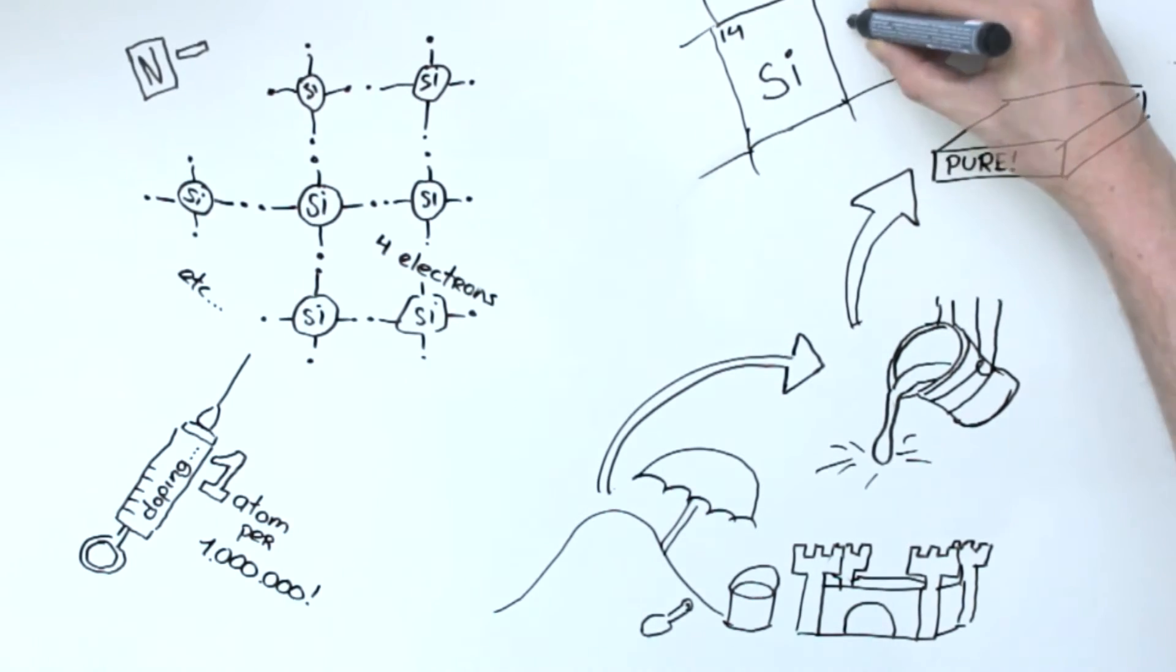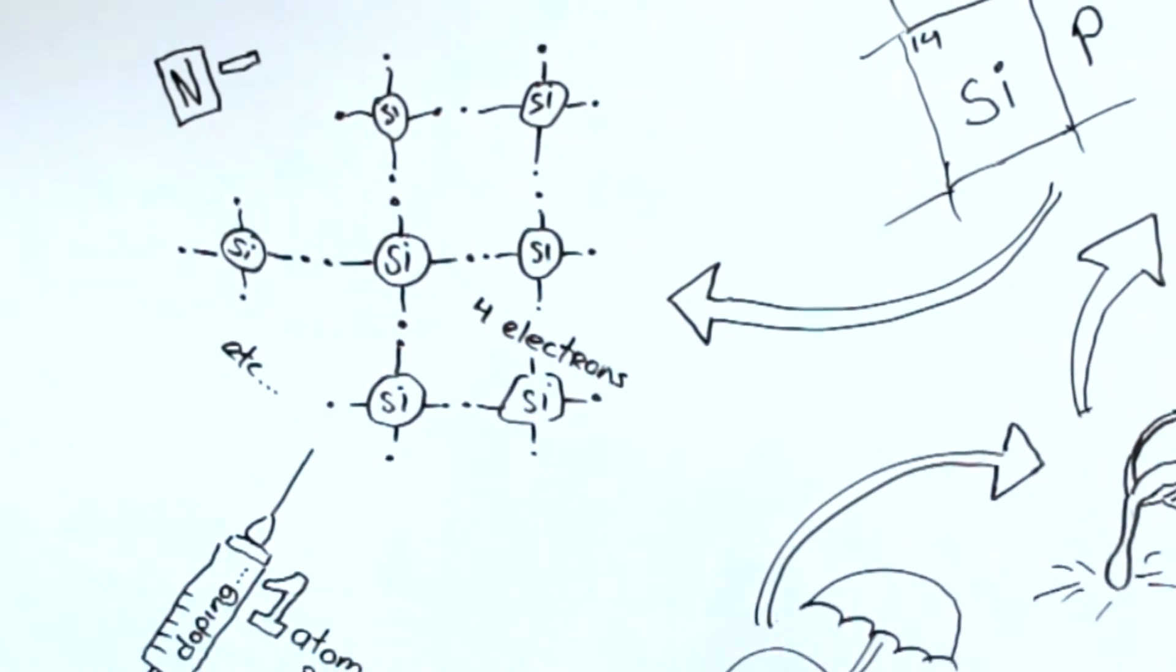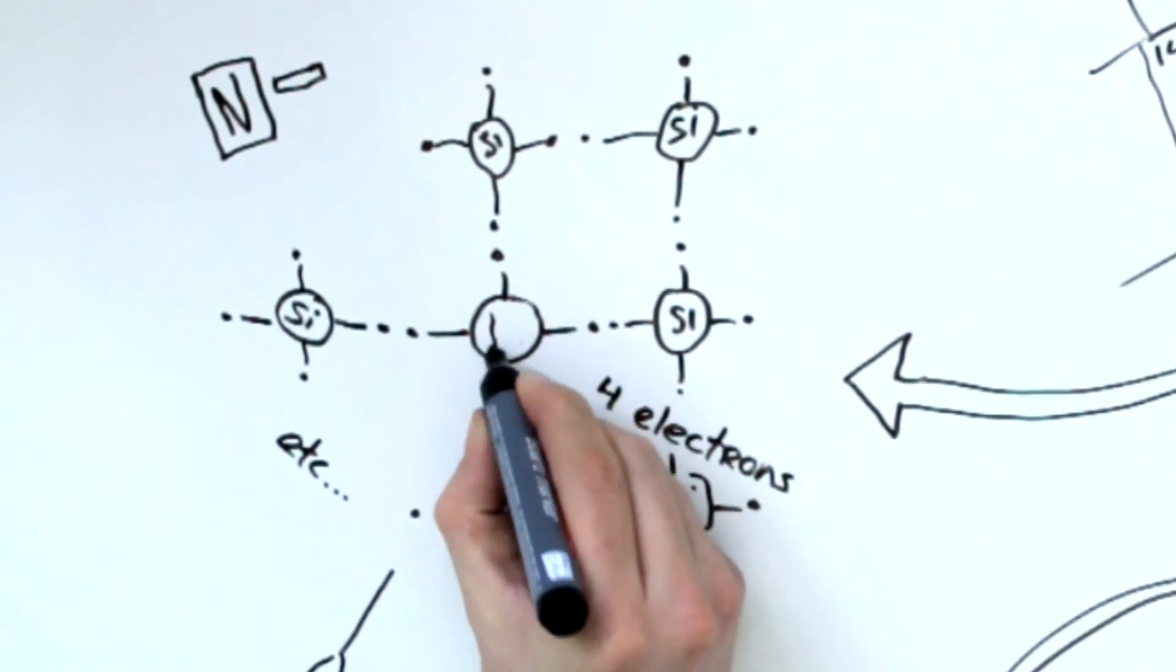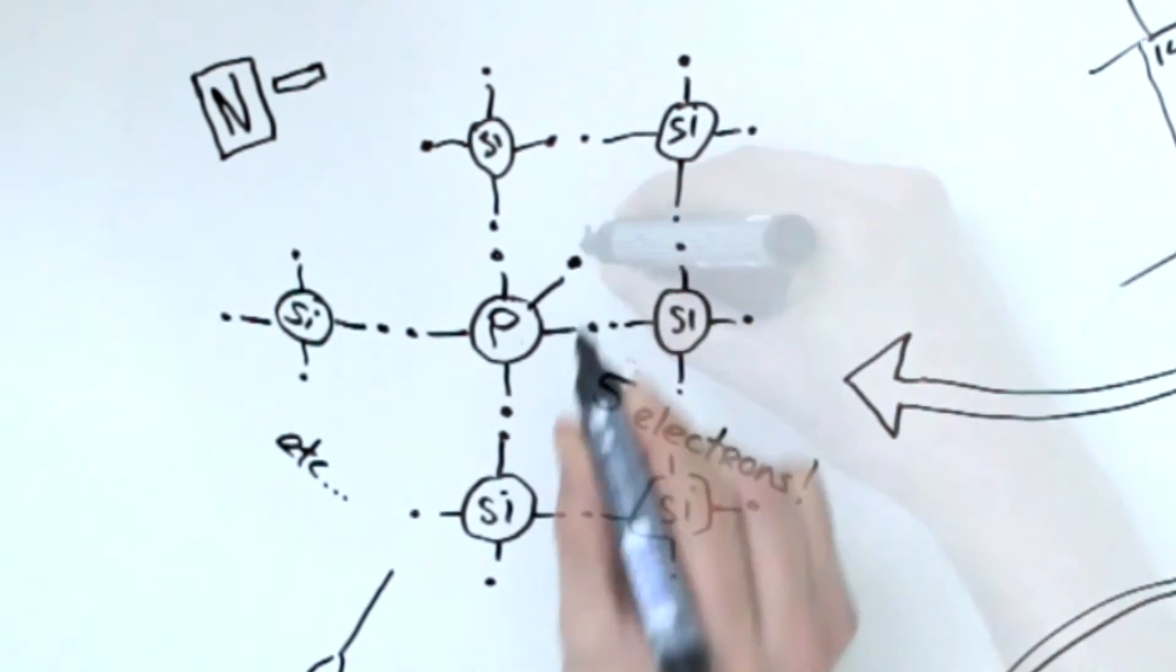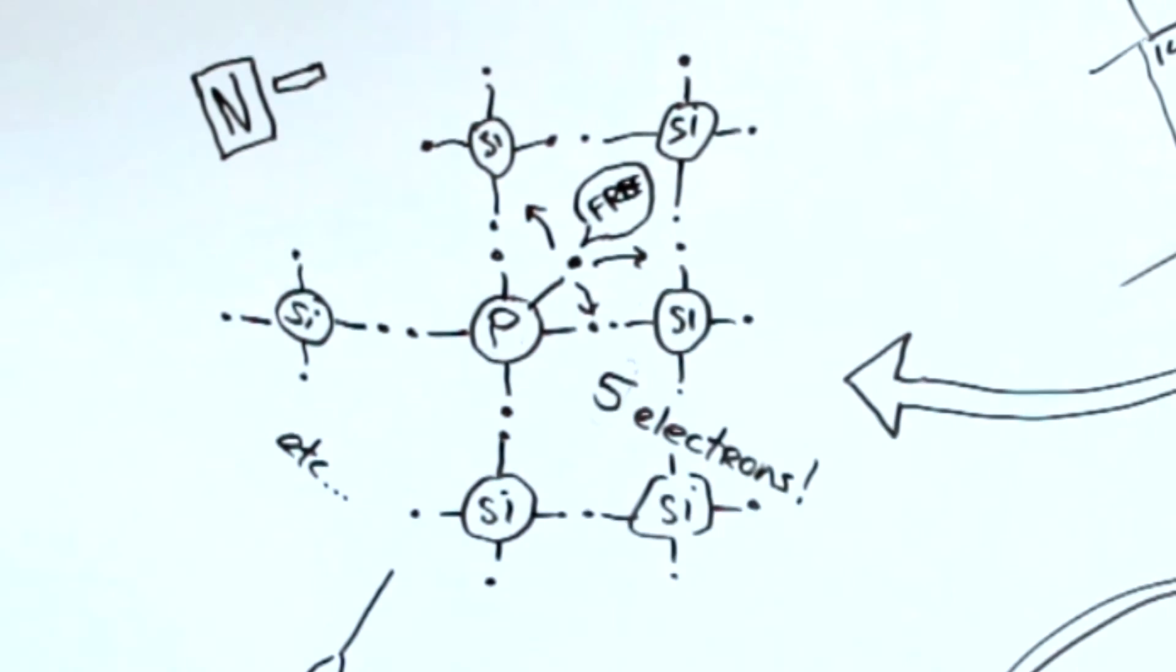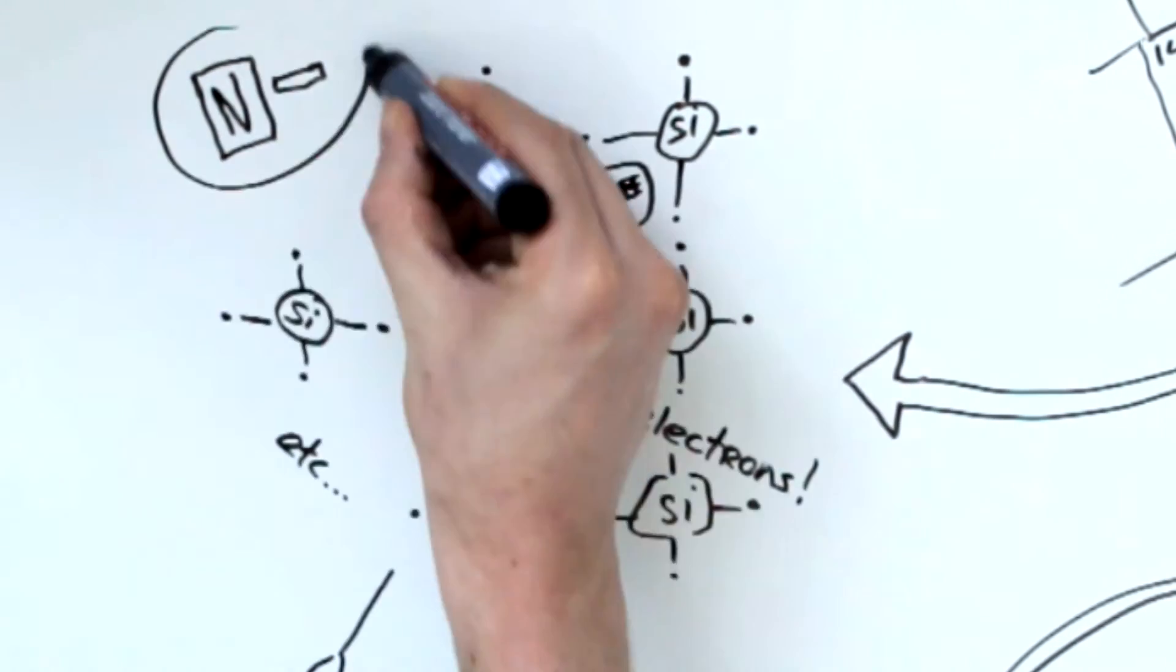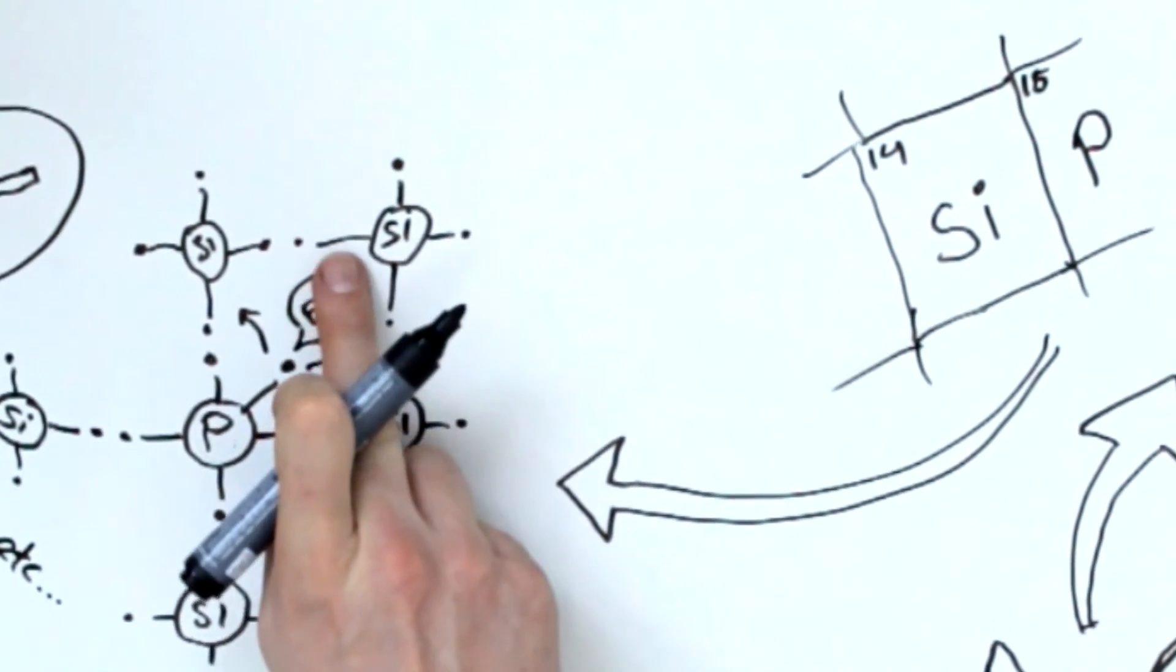One material we can add is phosphorus. Phosphorus fits nicely into the silicon crystal structure, although it has five electrons instead of four. These extra electrons have nothing to attach to and they can move freely through the material. The resulting material is a so-called N-type semiconductor, negatively charged silicon with a few extra electrons.